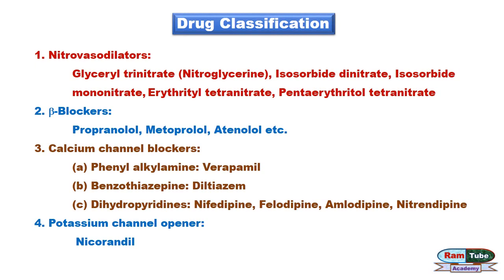There are several classes of drugs useful in the treatment of angina, such as nitro vasodilators, beta blockers, calcium channel blockers, and potassium channel openers. Out of these, nitro vasodilators are very important, especially in emergency conditions. We will discuss nitro vasodilators in the next video, so do subscribe to our channel.